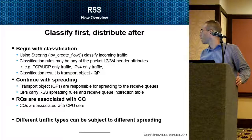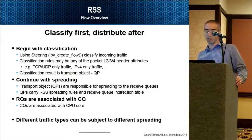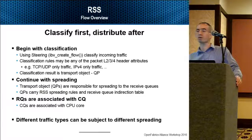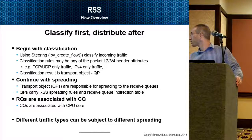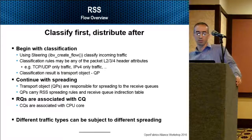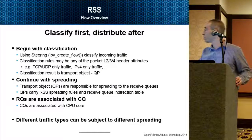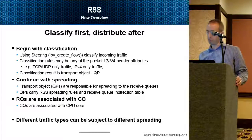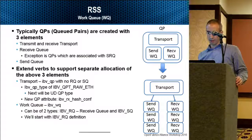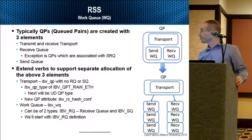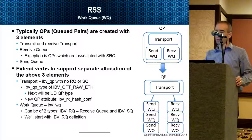Different traffic types can be subject to different spreading. This is already a requirement from several operating systems, and such capability already exists in most NICs that allow RSS offload for the operating system network stack.